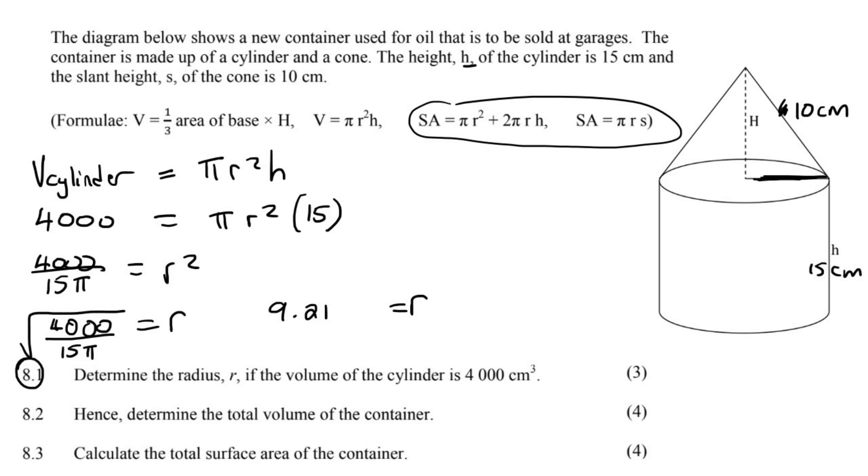You know, it's bad when you can laugh at your own jokes. 9.21 centimeters. Hence determine the radius. We did that. 9.21. Do you want to say 9.21 again, Kev? I think we've got it. 9.2.